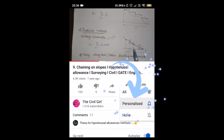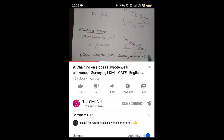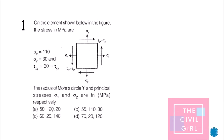The first question: on the element shown in the figure, the stresses in MPa are as follows — sigma x = 110, sigma y = 30, and tau_xy = tau_yx = 30 MPa. They've asked for the radius of the Mohr's circle, which is the maximum shear stress, and the principal stresses sigma 1 and sigma 2 (major and minor principal stresses).